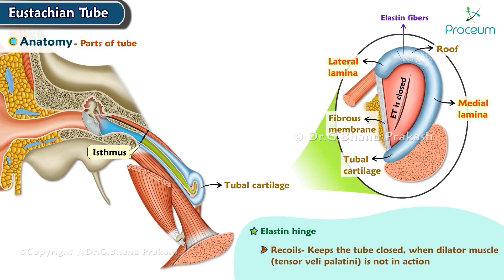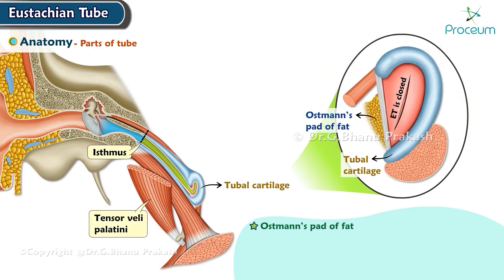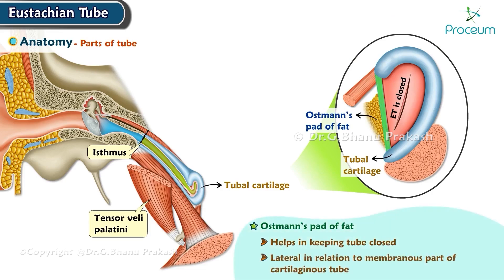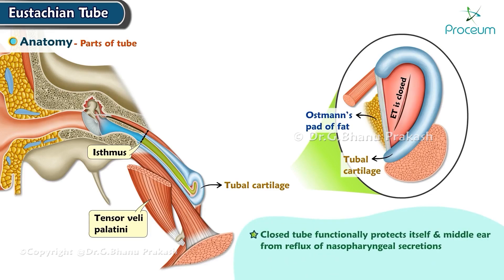When the elastin hinge recoils, it keeps the tube closed when the dilator muscle of the Eustachian tube — the tensor veli palatini — is not in action. Osman's pad of fat helps in keeping the tube closed; it is lateral in relation to the membranous part of the cartilaginous tube. The closed tube functionally protects the middle ear from reflux of nasopharyngeal secretions.